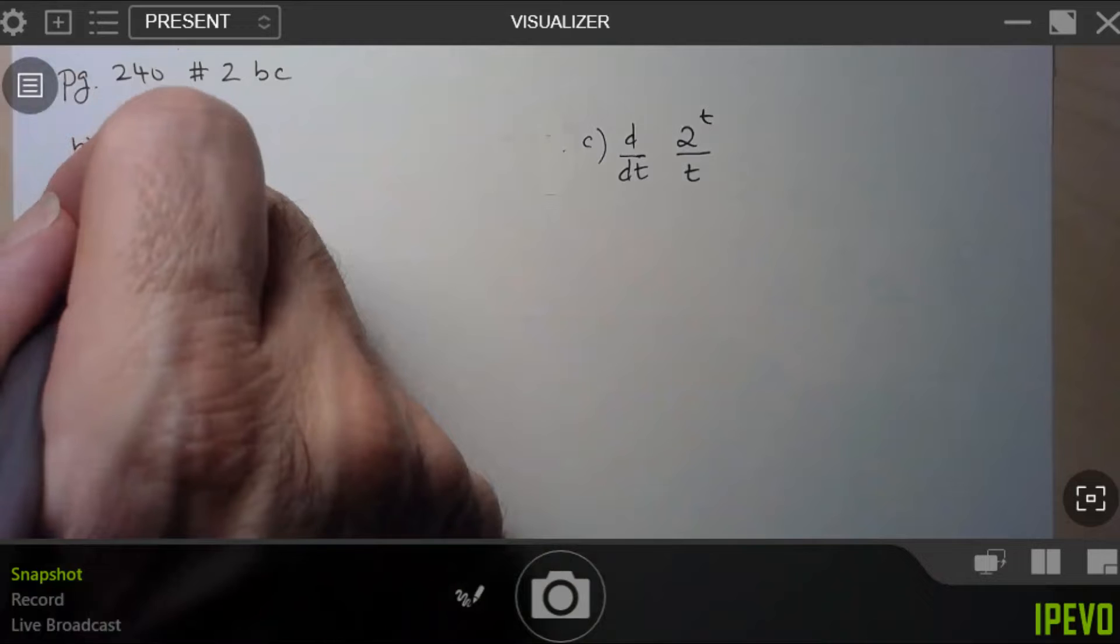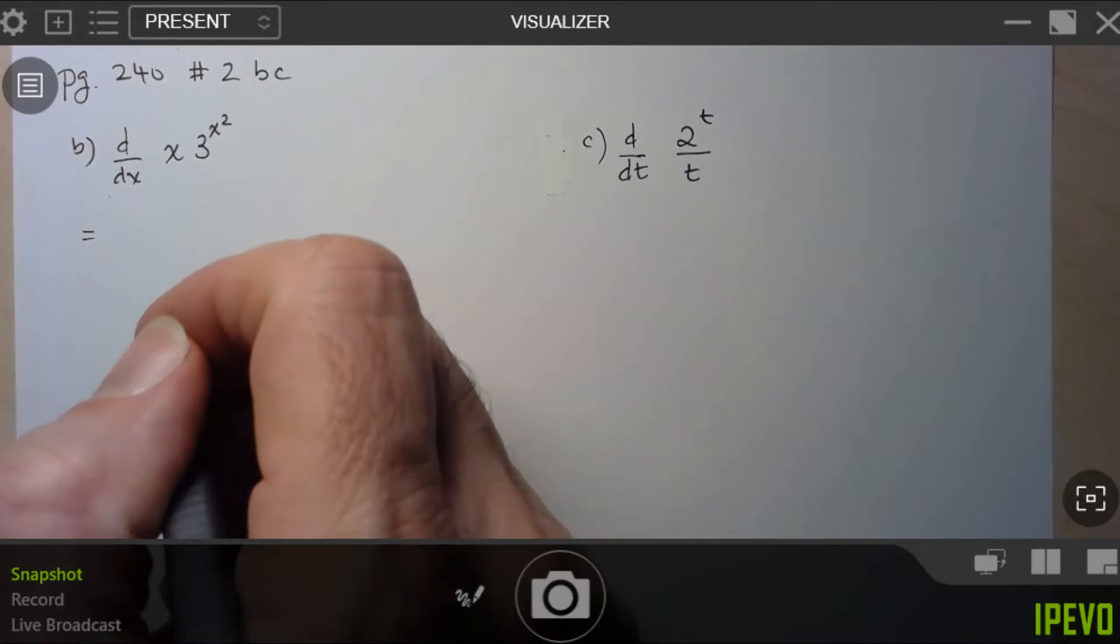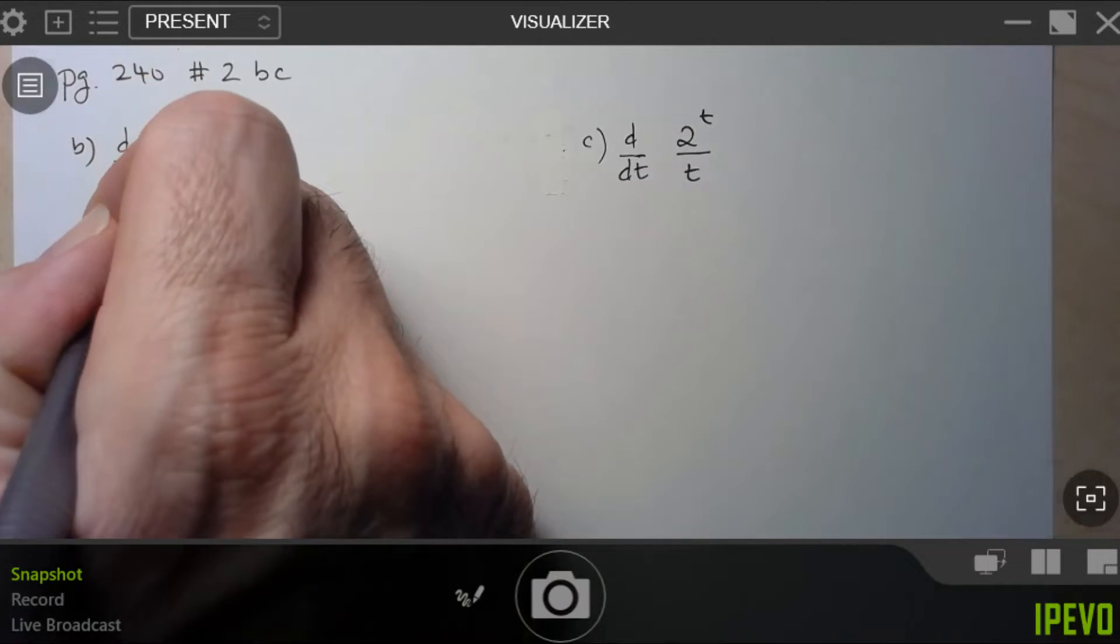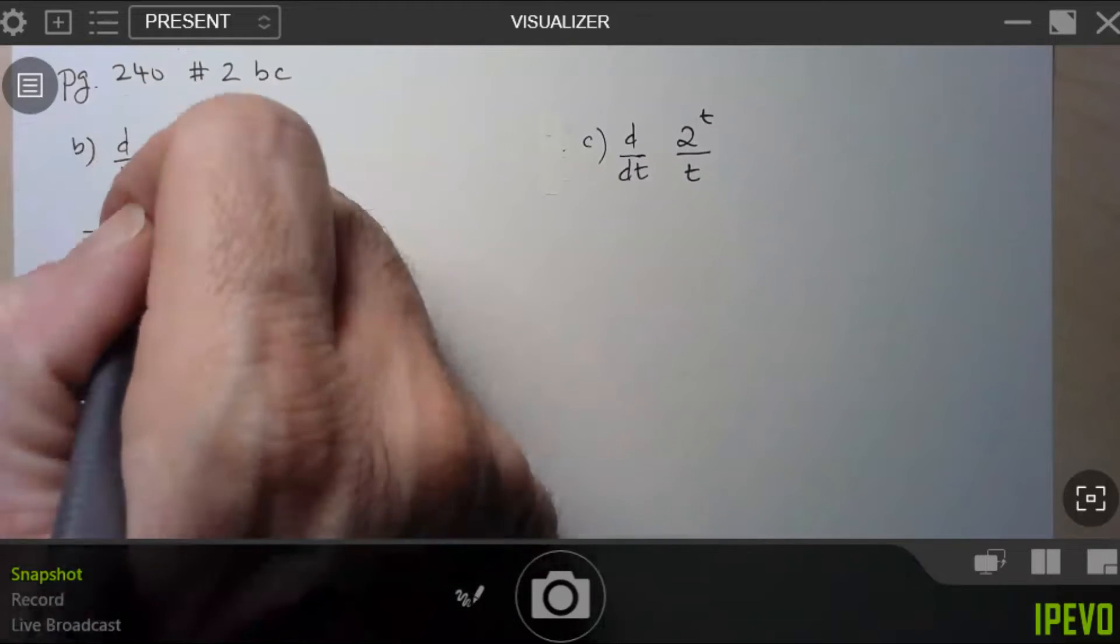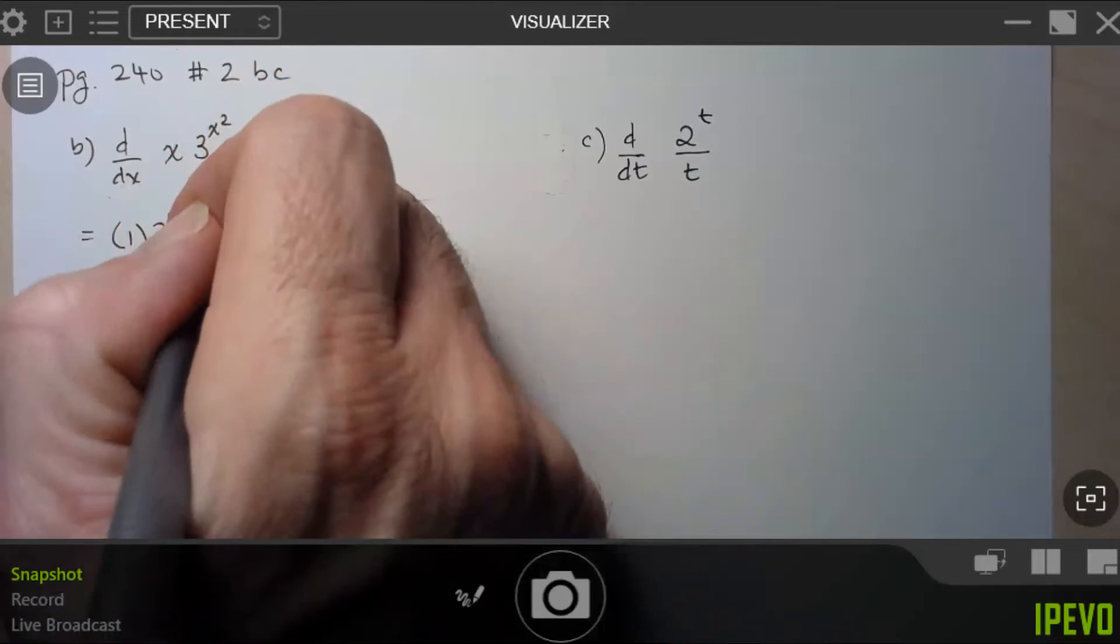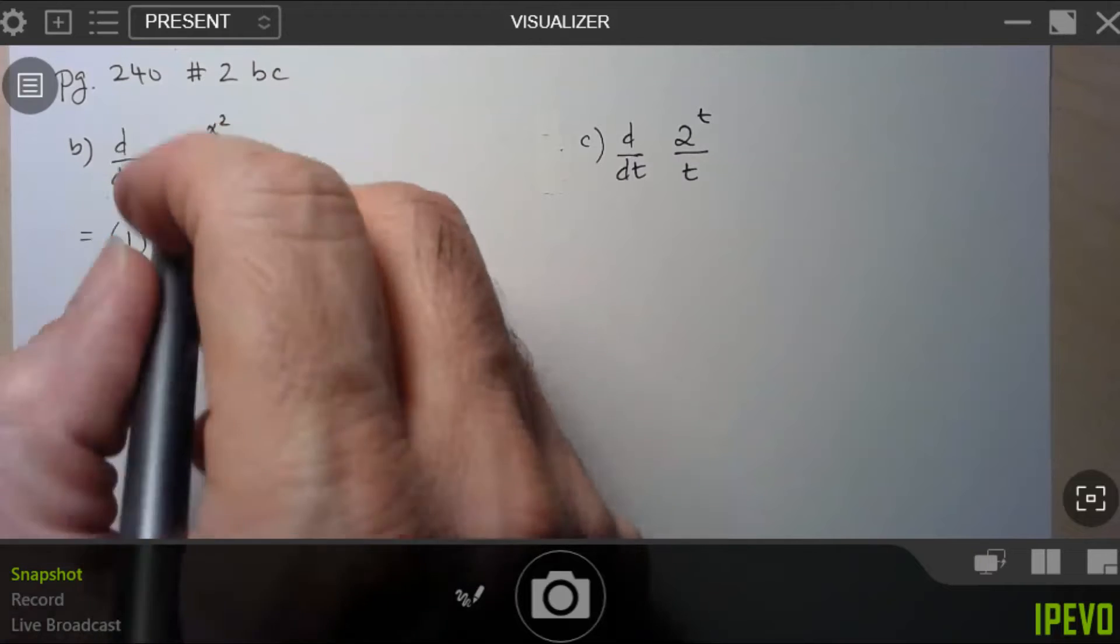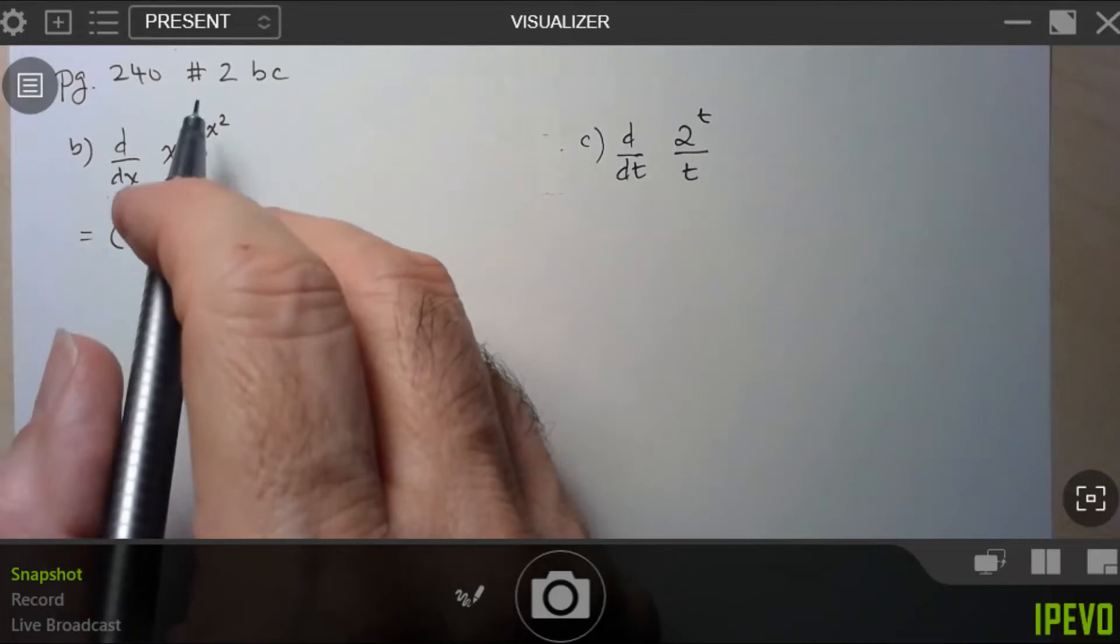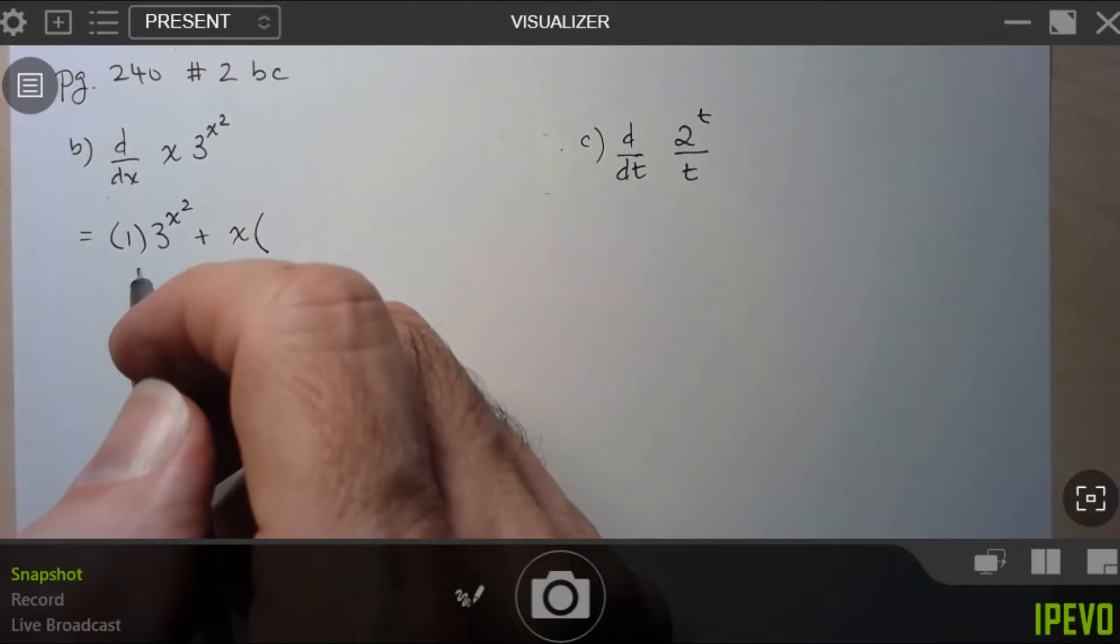So let's start with this one here. I'm just going to follow my product rule. It tells me to take the derivative of the first function. So derivative of x is just 1, times the second function. 3 to the x squared plus my first function x times the derivative of the second function. And this is where I need to do a little bit of work because I'm going to have to use the chain rule here.